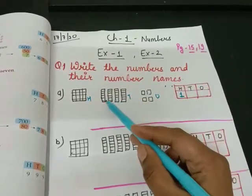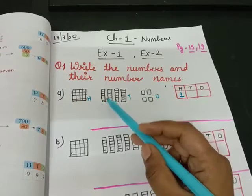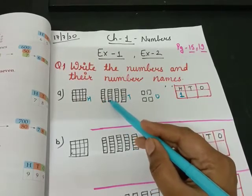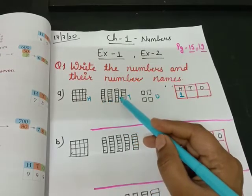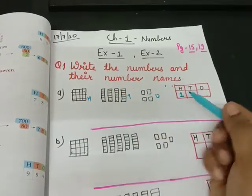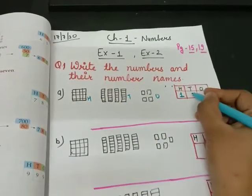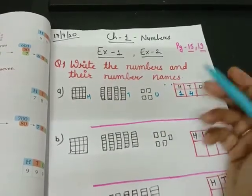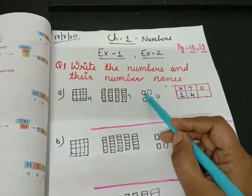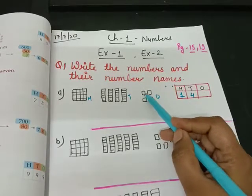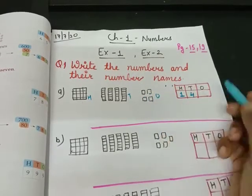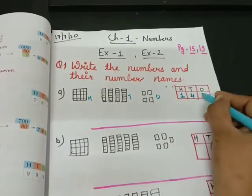How many tens are there? Now count: one, two, three, four. Four. And how many ones are there? One, two, three, four. Write four.